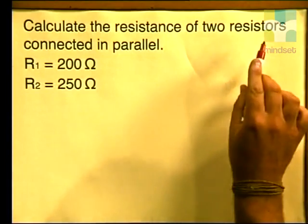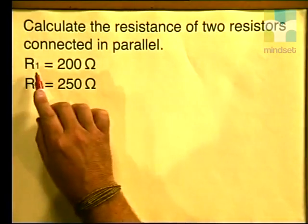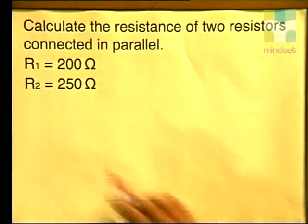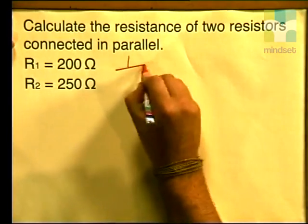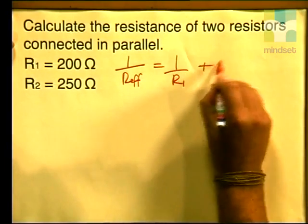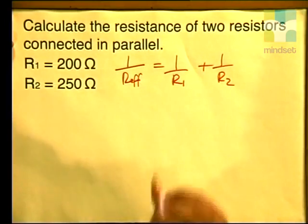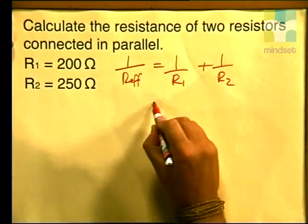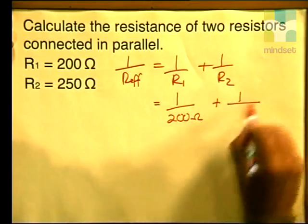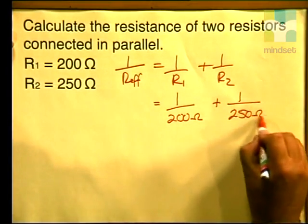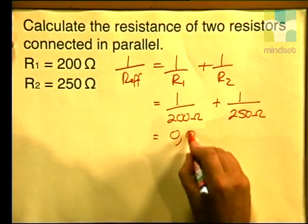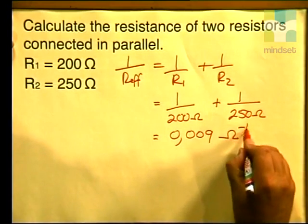Calculate the resistance of two resistors connected in parallel: R1 has a value of 200 ohms and R2 has a value of 250 ohms. The first thing we must do is write down our formula: 1 over R effective equals 1 over R1 plus 1 over R2. Substituting the values: 1 over 200 ohms plus 1 over 250 ohms. Using your calculators, you should get an answer of 0.009 ohms to the minus 1.